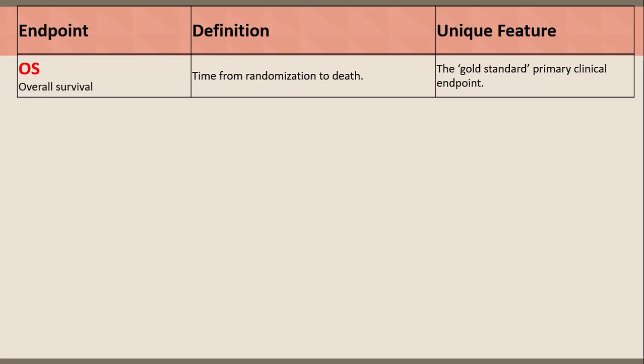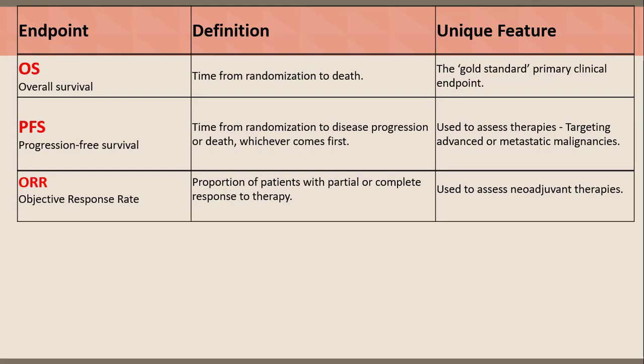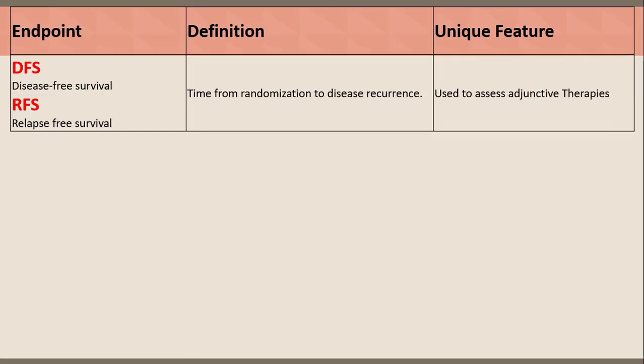Oncology clinical endpoints. To understand clinical trials, we should know the following definitions. OS (Overall Survival) — the time from randomization to death; the gold standard for primary clinical endpoint. PFS (Progression-Free Survival) — time from randomization to disease progression or death, whichever comes first; used to assess therapies targeting advanced or metastatic malignancies. ORR (Objective Response Rate) — proportion of patients with partial or complete response to therapy; used to assess neoadjuvant therapies. CR (Complete Response) or NED (No Evidence of Disease) — the lack of detectable evidence of tumor. DFS (Disease-Free Survival) and RFS (Relapse-Free Survival) — time from randomization to disease recurrence; used to assess adjuvant therapies.